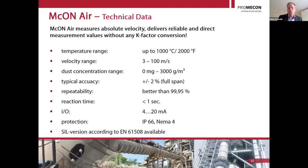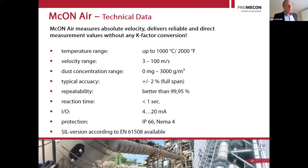We can measure from zero dust up to 3,000 grams per cubic meter — so we can measure the gas flow right out of a raw mill, including the main gas flow and the recirculation duct. Repeatability is our big strength: 99.95% or higher, because we are using a digital system. The digital clock repeatability is our repeatability — a digital clock is accurate to 10⁻⁵ or 10⁻⁶ — so repeatability is essentially a non-issue.